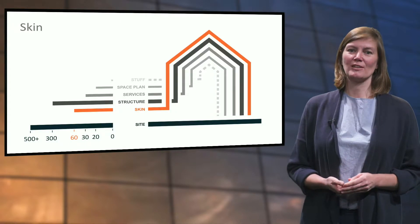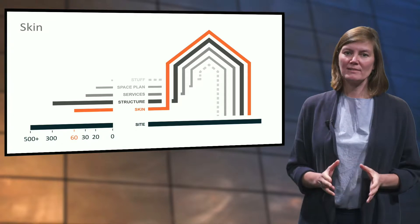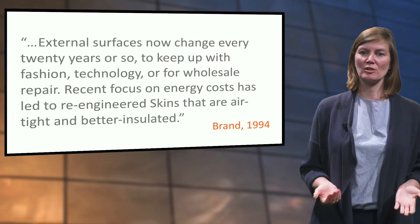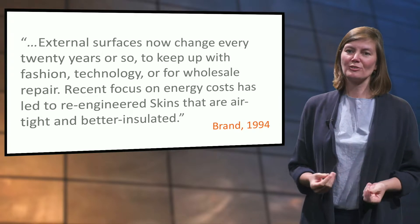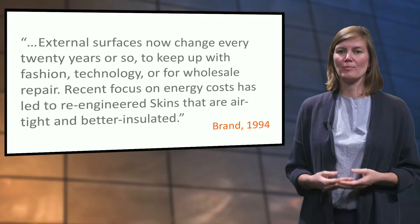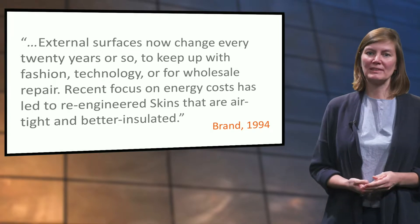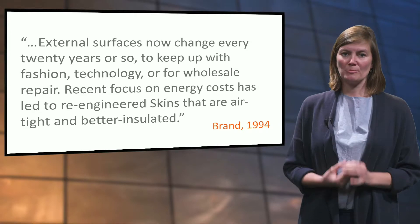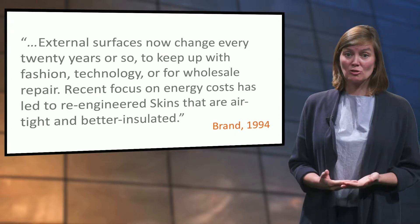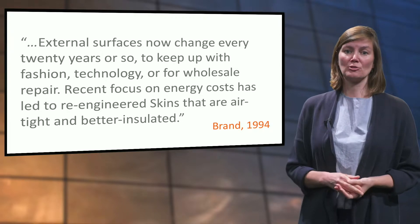The third layer is the skin of a building, consisting of the facade and the roof. Brandt explains that external surfaces now change every 20 years or so, to keep up with fashion, technology or for wholesale repair. Recent focus on energy costs has led to re-engineered skins that are airtight and better insulated. We already know that the structure and the skin of BK City coincide within the facade, which makes it hard to change. However, parts of the facade such as window frames are non-structural skin elements, which have changed a couple of times during the past 100 years. In 1953, the entire attic was converted into general office space for the University, and the continuous strip of roof windows dates from this time.